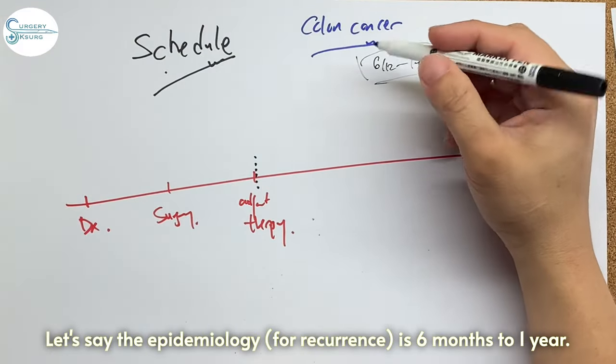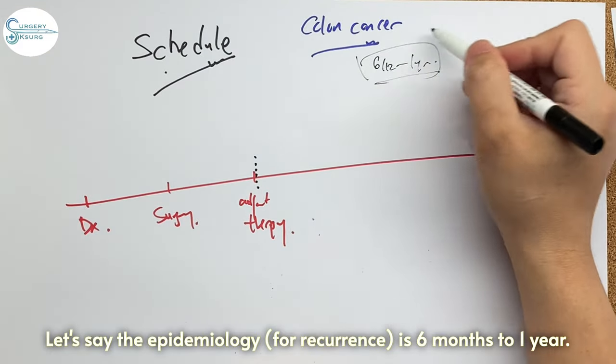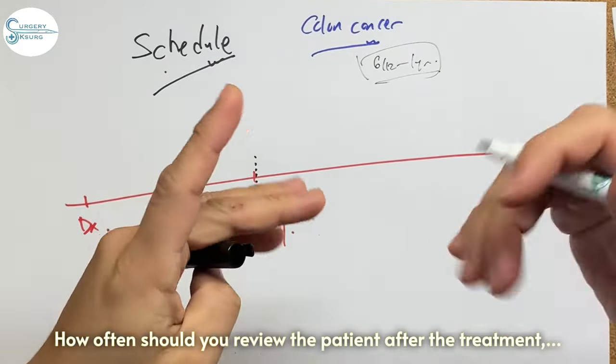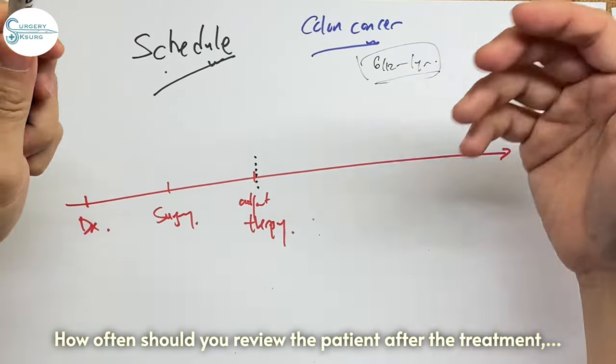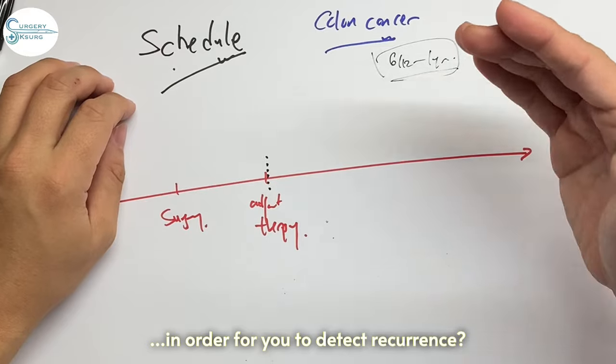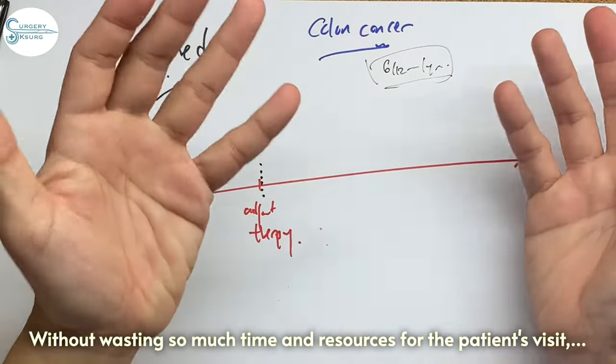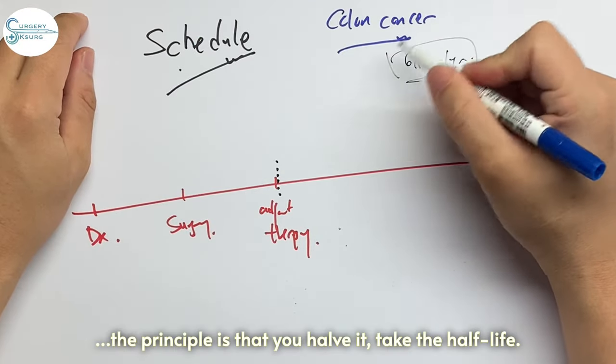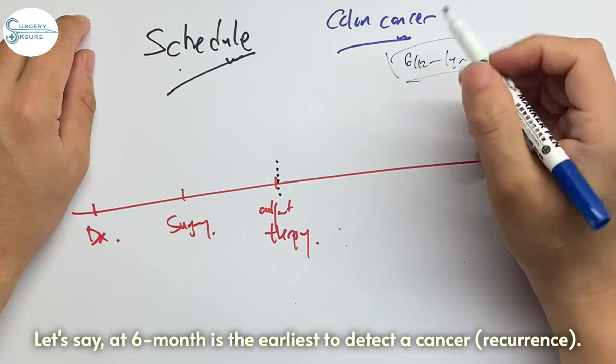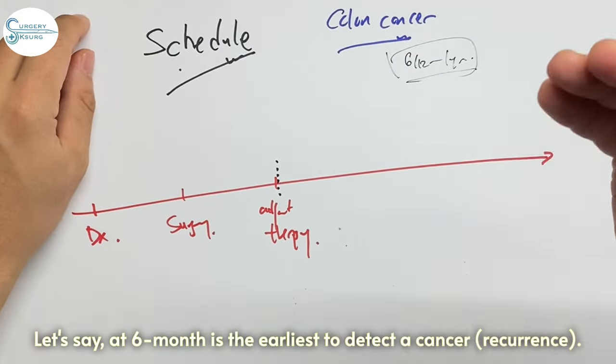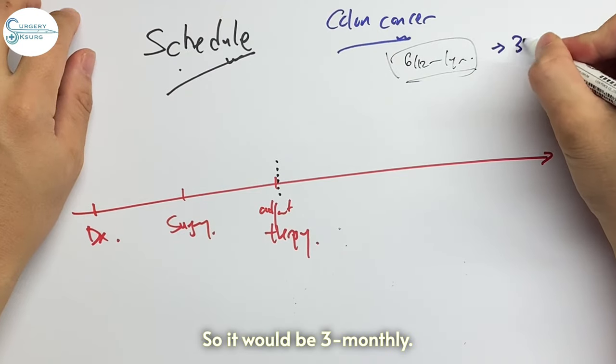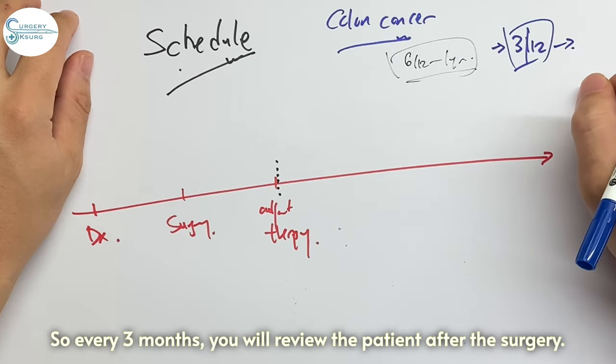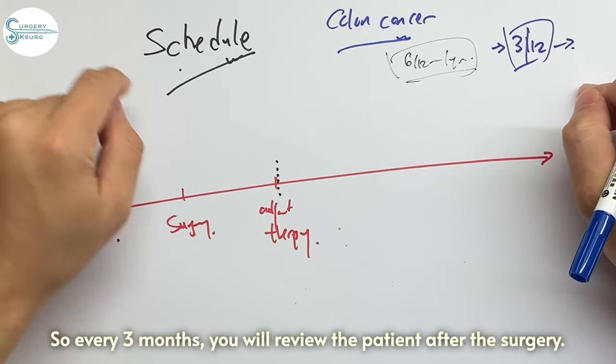So let's say the epidemiology of this cancer is six months to one year. So how often should you review the patients after the treatment? In order for you to detect recurrence without wasting so much time and resources for patient visits, the principle is that you half it, take a half-life. Let's say six months is the earliest to detect a cancer, so it will be three monthly. So every three months you will review the patient after the surgery.